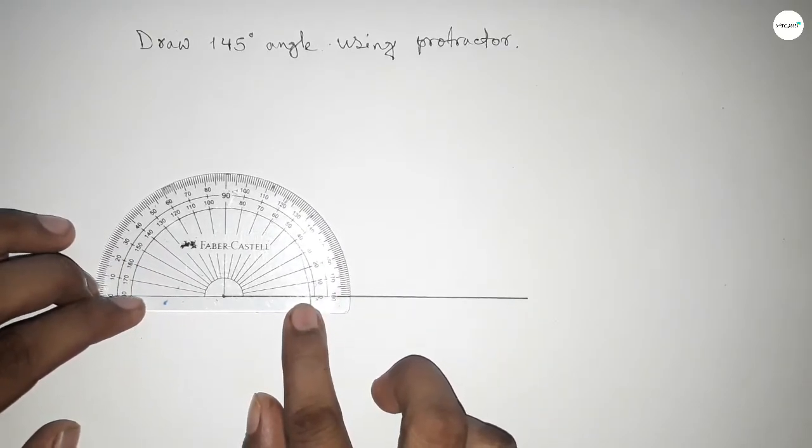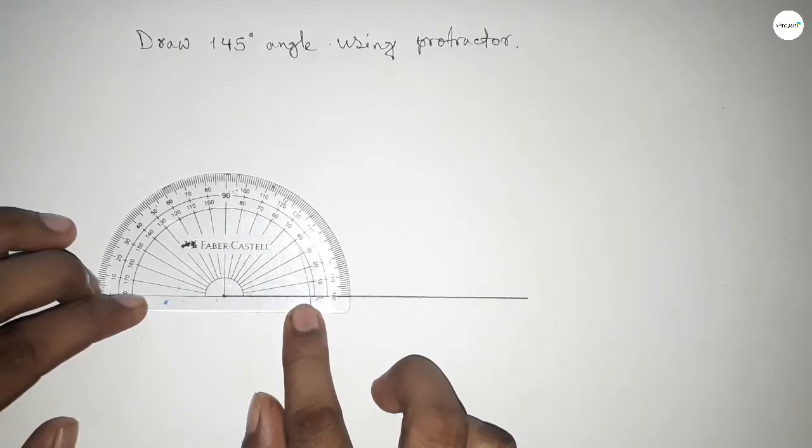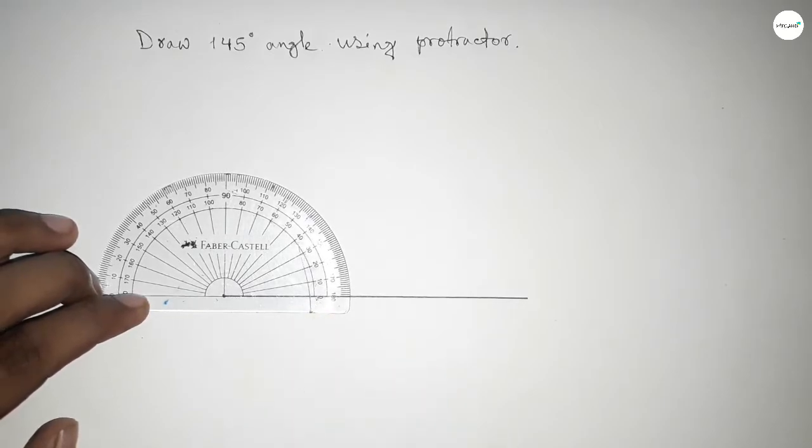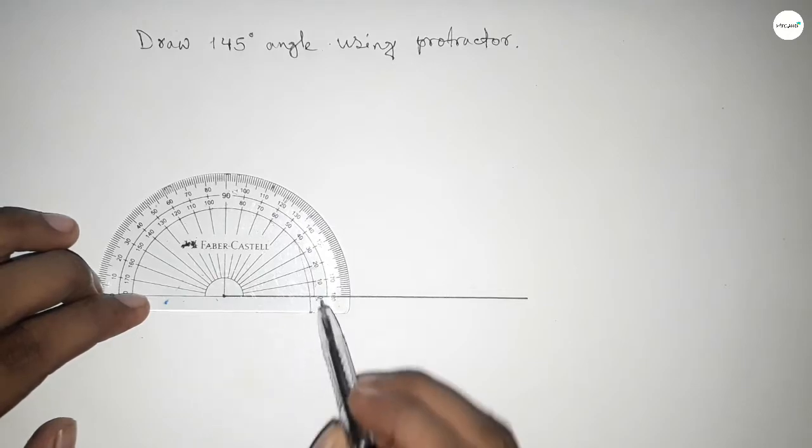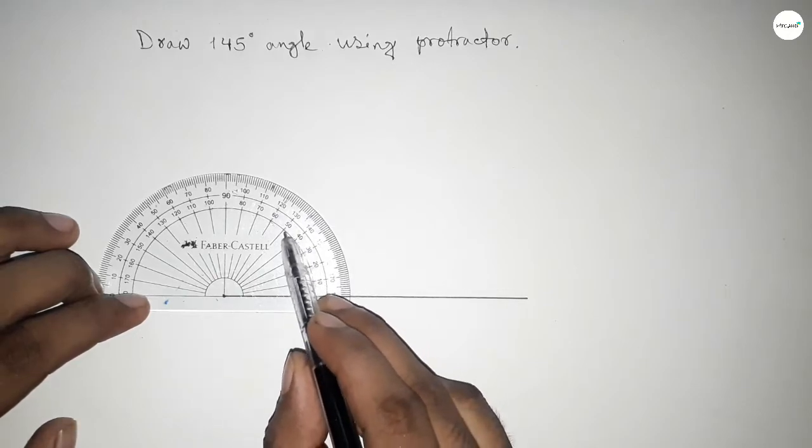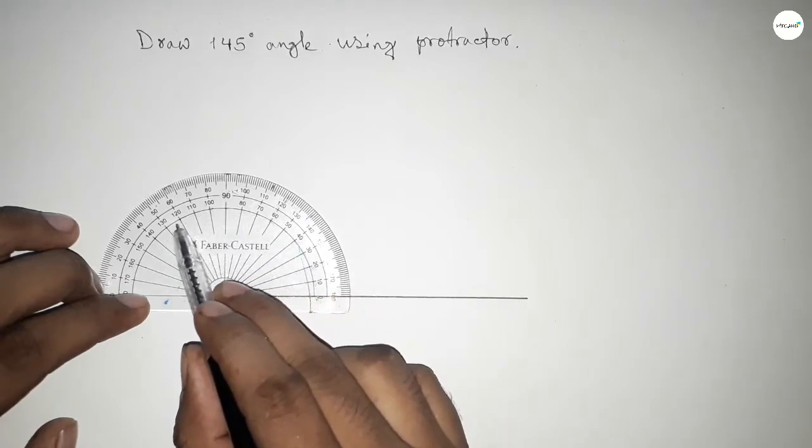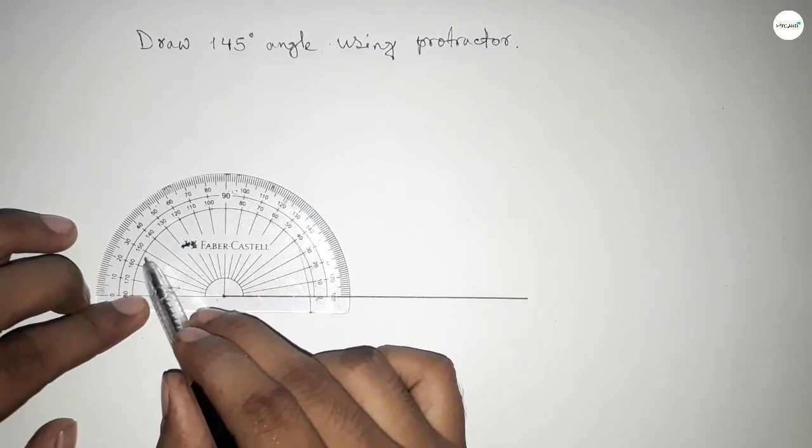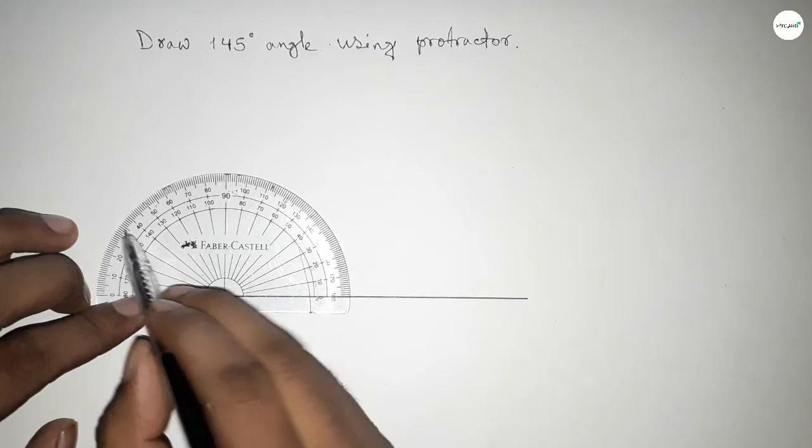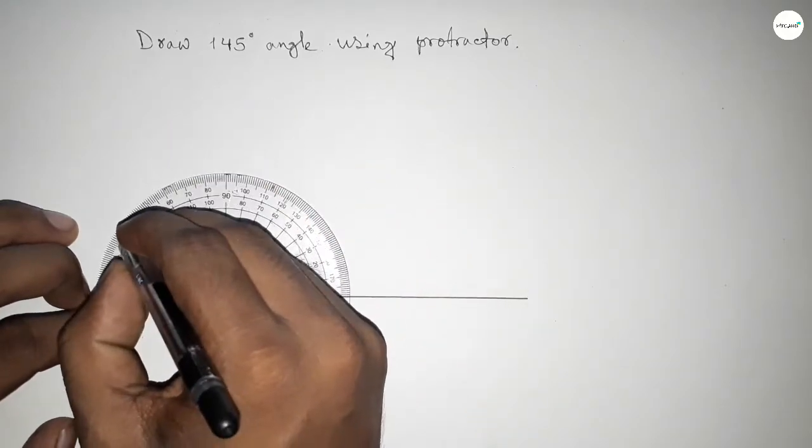Then counting the angles - okay, so starting angle here: 0, 10, 20, 30, 40, 50, 60, 70, 80, 90, 100, 110, 120, 130, and 140. So between 140 to 150 we can get the 145-degree angle.